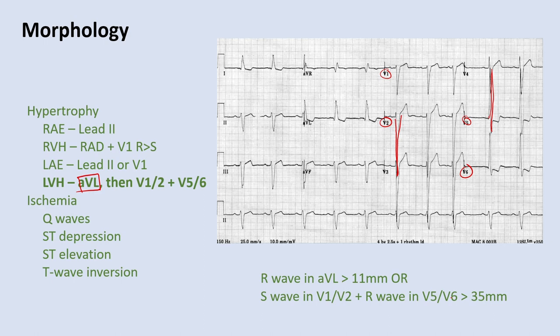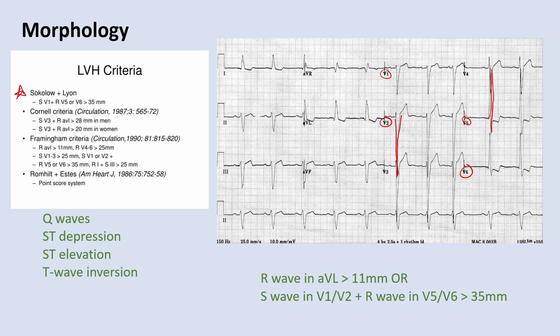To summarize LVH criteria: R wave in AVL greater than 11 millimeters (Framingham), S wave in V1/V2 plus R wave in V5/V6 greater than 35 millimeters (Sokolov-Lyon), or the Cornell criteria: S wave in V3 plus R wave in AVL greater than 28 millimeters in men or greater than 20 millimeters in women. Also note the ST depressions following large R waves — this is the LVH strain pattern, caused by repolarization abnormality. This differs from ischemic T wave inversions, which we'll cover shortly.